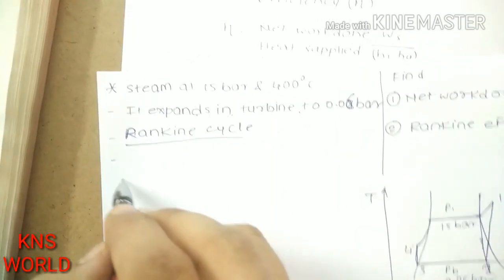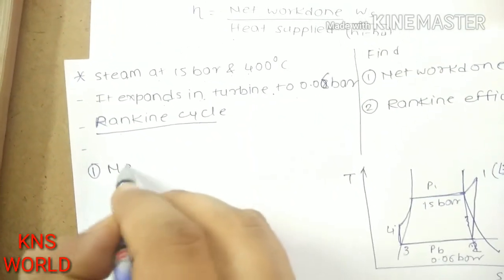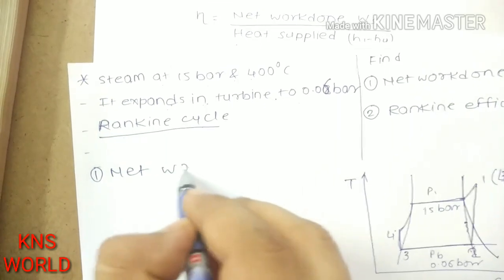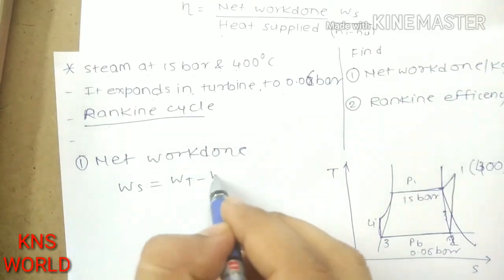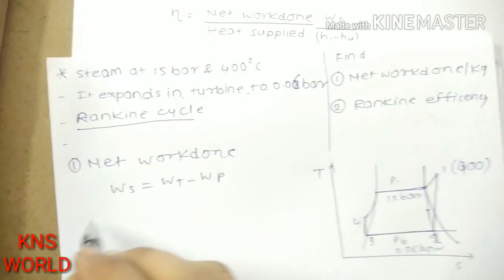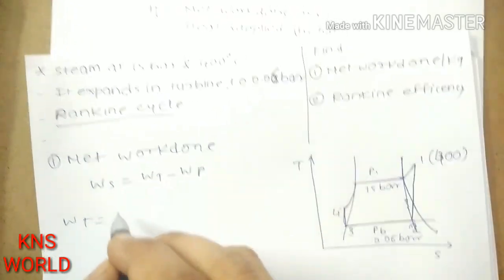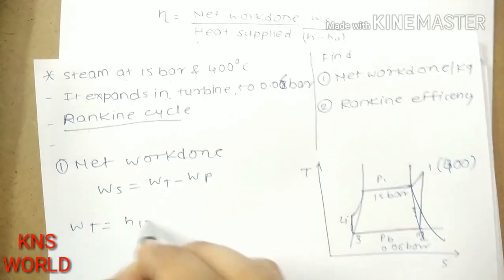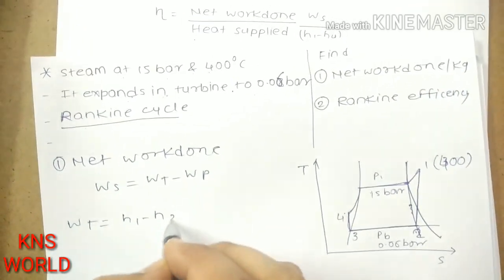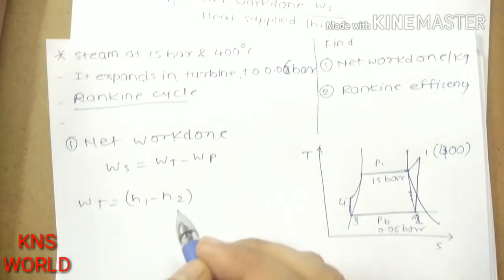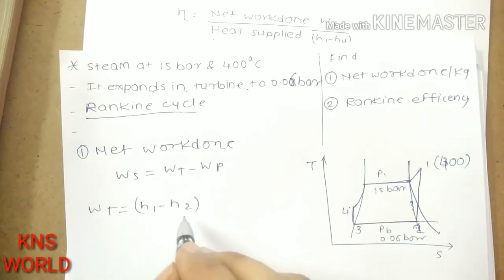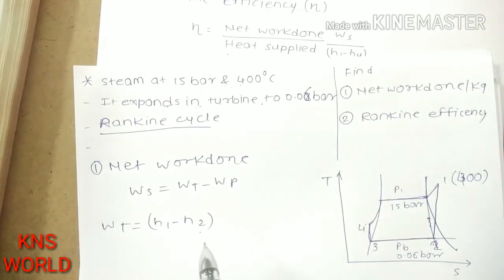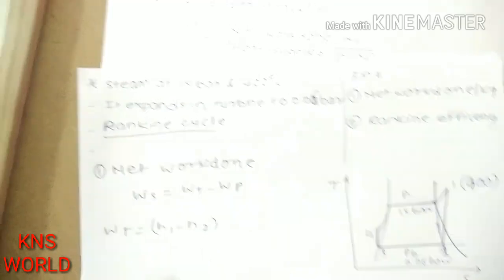Now we will first find net work done. The formula is Ws equals Wt minus Wp, so Wt equals H1 minus H2. We need to find H1 and H2 from the steam table.